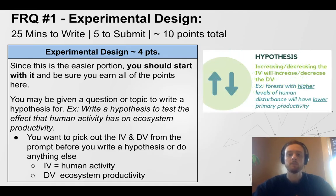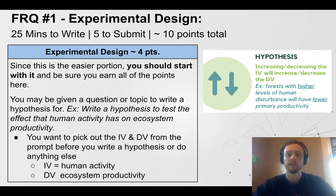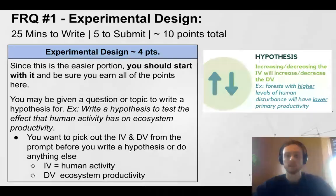Next, think about your hypothesis. We have to phrase it in a very specific format to make sure we earn credit for APES. That format is: increasing or decreasing the IV will increase or decrease the DV. You do not want to write an if-then because you do not need to make a prediction — keep it simple. In this case, we would say: forests with higher levels of human disturbance will have lower primary productivity.